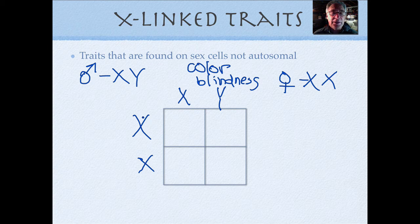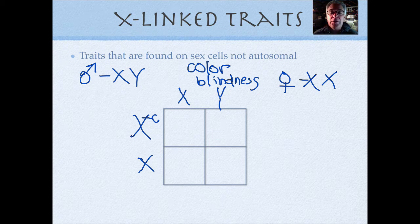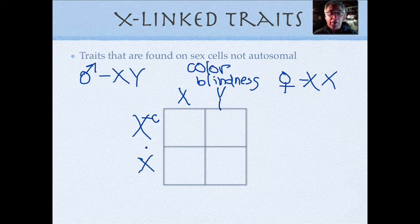Sometimes what happens is females will carry the actual trait of colorblindness, we'll call it C, on one of the two. It's rare for females to have it on both X, although there are some.